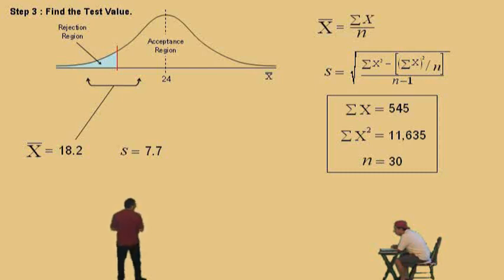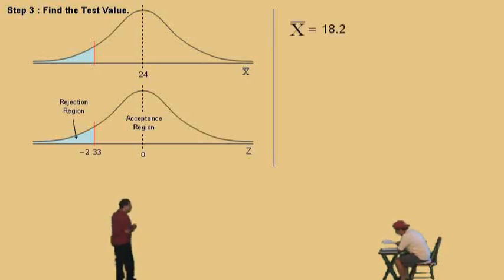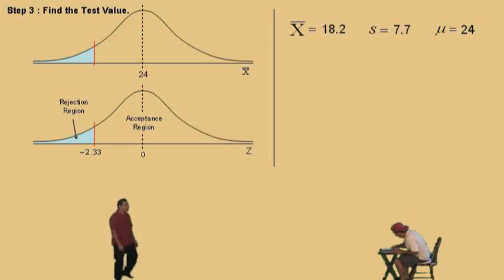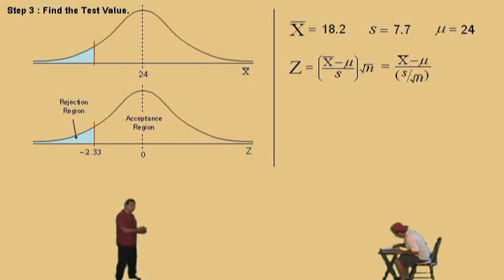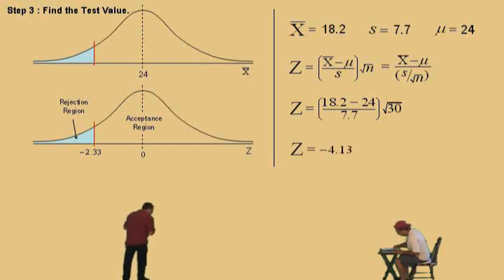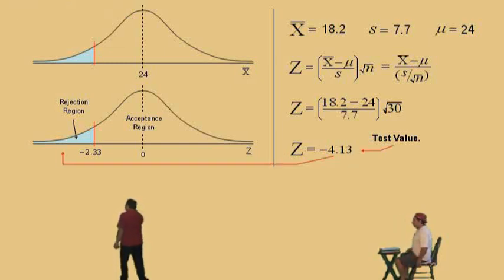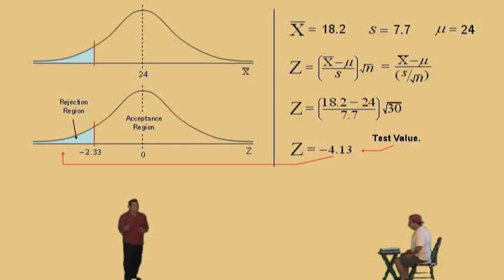We're going to find our test value — everything translated to Z values. Critical value is negative 2.33. Our sample mean is 18.2, sample standard deviation is 7.7, and population mean mu is assumed to be 24. Using the Z formula, we plug in x-bar 18.2, mu 24, sample standard deviation 7.7, multiplied by the square root of 30. We get Z equals negative 4.13 — that is our Z test value. Our Z test value falls to the left of our critical value, which means it falls in the rejection region. Our decision is to reject H naught.